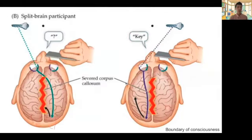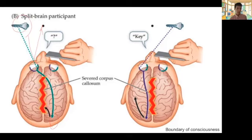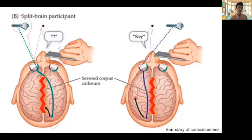In the case of a split-brain patient with no anterior commissure either, when stimulus information goes only to the right hemisphere, it's not going to cross to the left. If presented to the right side of the visual hemifield, it goes to the language side of the brain and results in a verbal response. The split brain thus produces the famous 'I don't know' versus 'key' dissociation — a standard explanation of split-brain behavior.